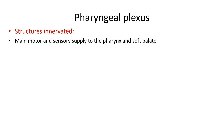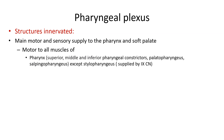Now let us see what structures are innervated by the pharyngeal plexus. It is the main motor and sensory supply for the pharynx and soft palate. It is motor to all muscles of the pharynx — the superior, middle, and inferior constrictors, the palatopharyngeus, and the salpingopharyngeus. The exception is the stylopharyngeus, which is supplied by the glossopharyngeal nerve.